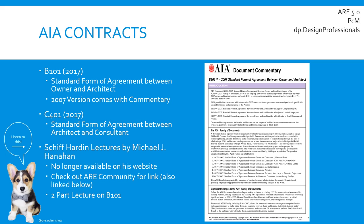For the C401, the standard form of agreement between the architect and consultant, there is no version with commentary and no Schiff Harden lecture. But if you understand the B101, you will easily understand the C401 — it's basically the same contract, just switching out who it's between: instead of the owner it's the architect, and instead of the architect it's the consultant. So definitely master the B101 first, and the C401 should be very easy to pick up.